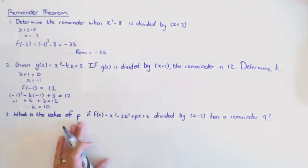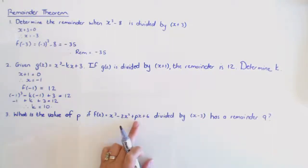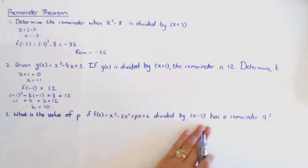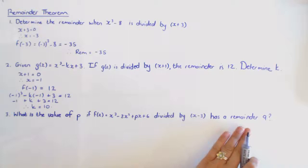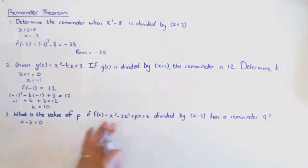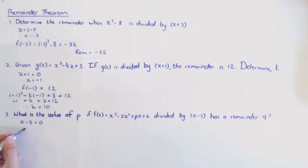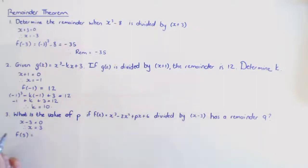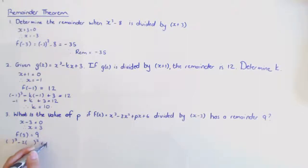In the last question, we need to find the value of p if f(x) divided by x minus three has remainder nine. I take x minus three, make that zero, so x equals three. Substituting three into the function x cubed minus two x squared plus px plus six should equal nine.